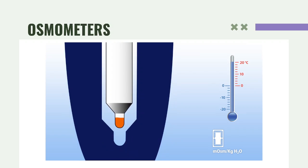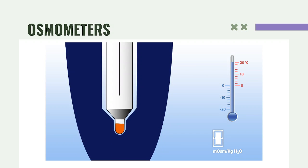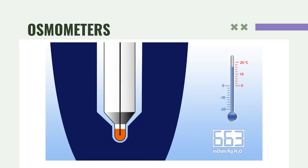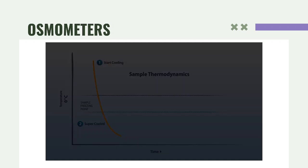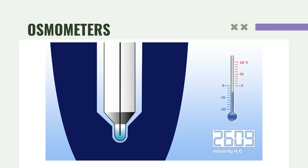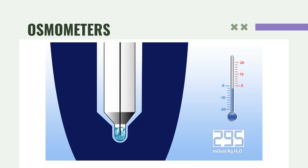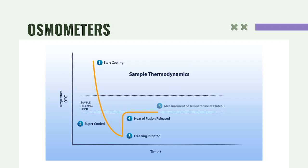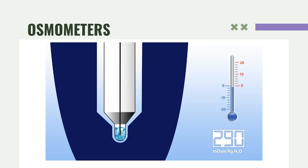Inside the osmometer, once a sample is introduced in the cooling chamber, it is rapidly supercooled to a temperature below the expected freezing point. A physical shock — the freeze pulse — is introduced, partially crystallizing the sample and forming an ice-water mixture around the temperature probe. The heat of fusion raises the sample temperature to a plateau where liquid-solid equilibrium is maintained. This temperature plateau represents the true freezing point; the osmometer measures it and calculates concentration in milliosmoles per kilogram of water.